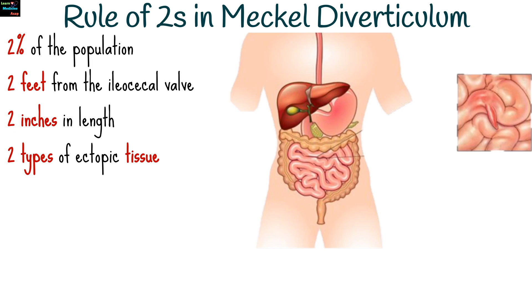The diverticulum can contain two types of ectopic tissue, which are not normally found in the small intestine: gastric tissue, which can secrete acid and cause ulcers, and pancreatic tissue, which can also be present but is less common.